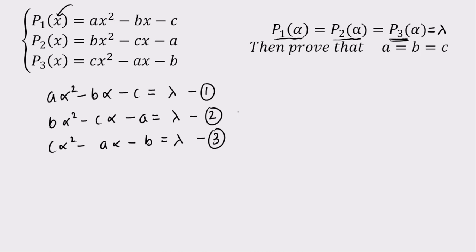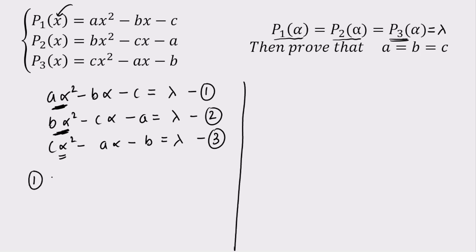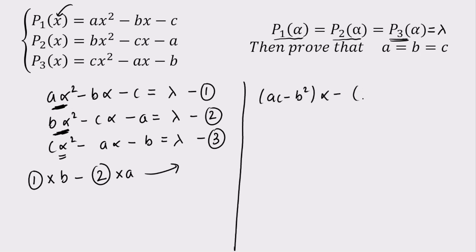Now I'm going to eliminate alpha² from the equations. If I eliminate alpha² from equations 1 and 2 by multiplying equation 1 by B and equation 2 by A, the result is: (AC − B²)·alpha − (BC − A²) = lambda·(B − A).